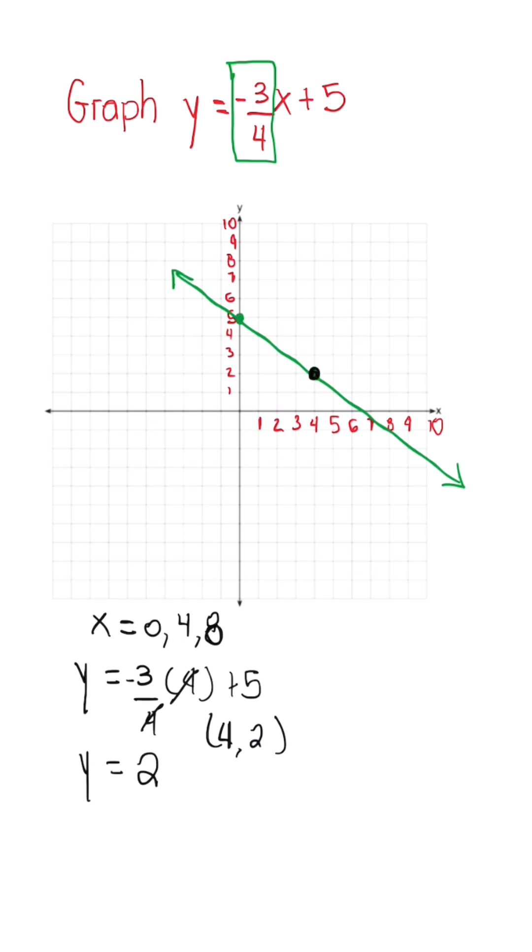Then if we do the same thing for when x is 8, we simplify by 4, so 8 turns into 2. Negative 3 times 2 is negative 6. Negative 6 plus 5 is negative 1. So our last ordered pair would be (8, -1).